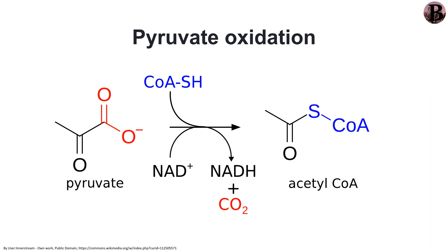During the second stage, the pyruvate crosses the double membrane of the mitochondrion to enter the matrix. Pyruvate, which is a three-carbon molecule, is altered to acetyl-coenzyme A, which is a two-carbon molecule, in the process of pyruvate oxidation.